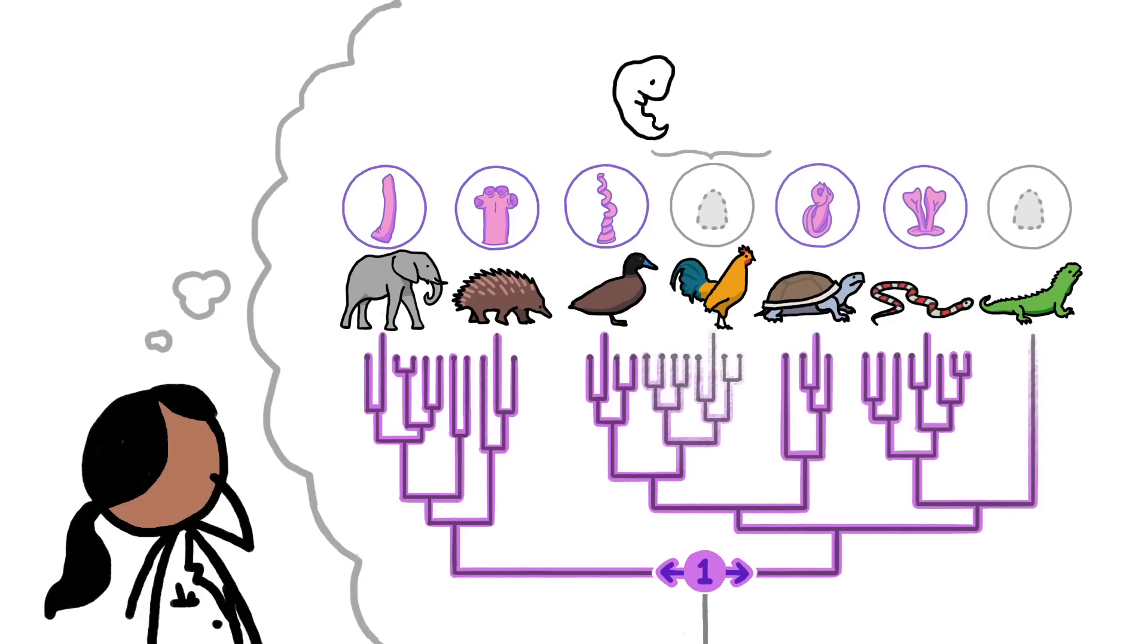So if all of these diverse penises had a common genesis, all amniotes, even birds and tuataras, should have some version of a penis when they're embryos, even if they lose it later. And it turns out that the embryos from penisless birds do have penis nubs, which recede before hatching.